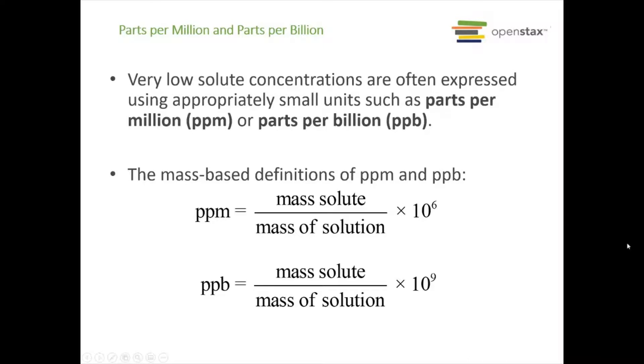Now we have some units that are pretty close to my heart, from my days in air quality and water quality: parts per million and parts per billion. These are very, very low solute concentrations. Tiny amounts, but tiny amounts can make a big difference. Just because something is low in concentration doesn't mean that it's harmless. PPM, or parts per million, is mass of solute divided by your mass of solution times 10 to the sixth power. PPB is mass of solute to mass of solution times 10 to the ninth, even smaller. But very important types of units.